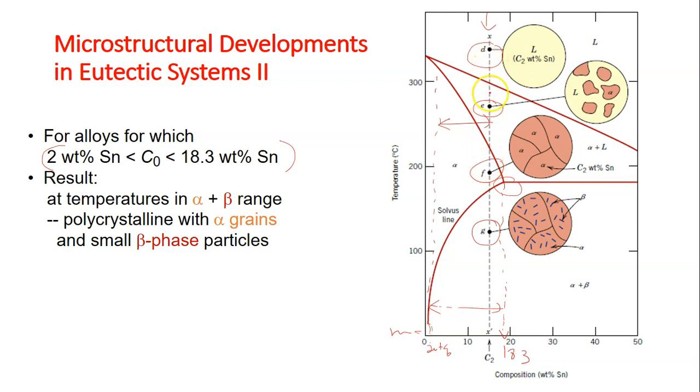The development of microstructures at point D, E, and F are very similar to the first case, which I have explained in my first video or the previous video. Now from point F, if we further cool the alloy,